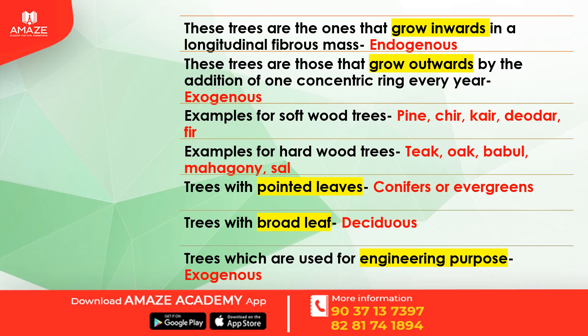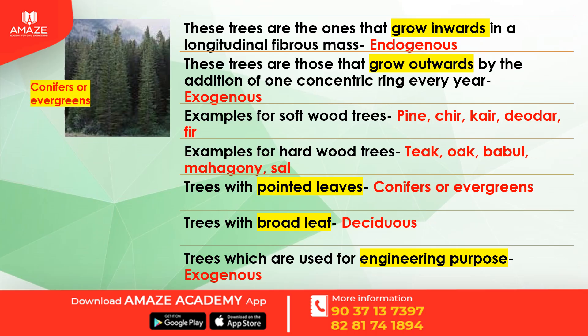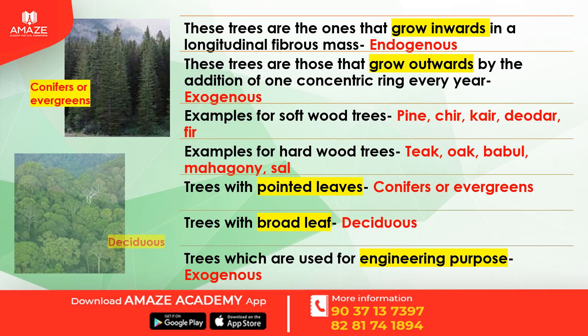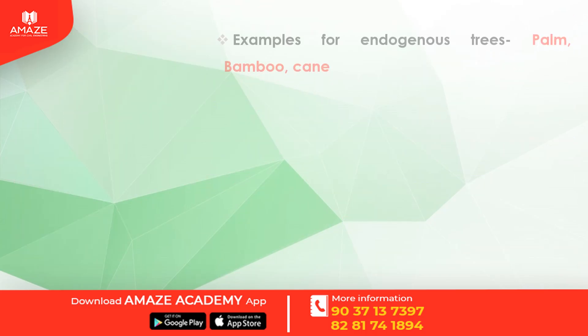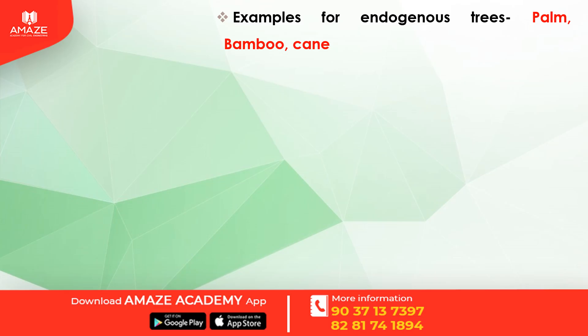Exogenous trees are of two types: hardwood trees and softwood trees. Examples of softwood trees are pine, chur, kair, deodar, and fir. Examples of hardwood trees are teak, oak, babul, mahogany, and sal. Trees with pointed leaves are called conifers or evergreens. Trees with broad leaves are called deciduous. Trees used for engineering purposes are exogenous trees. Examples of endogenous trees are palm, bamboo, and cane. Medullary rays are distinct in hardwood.